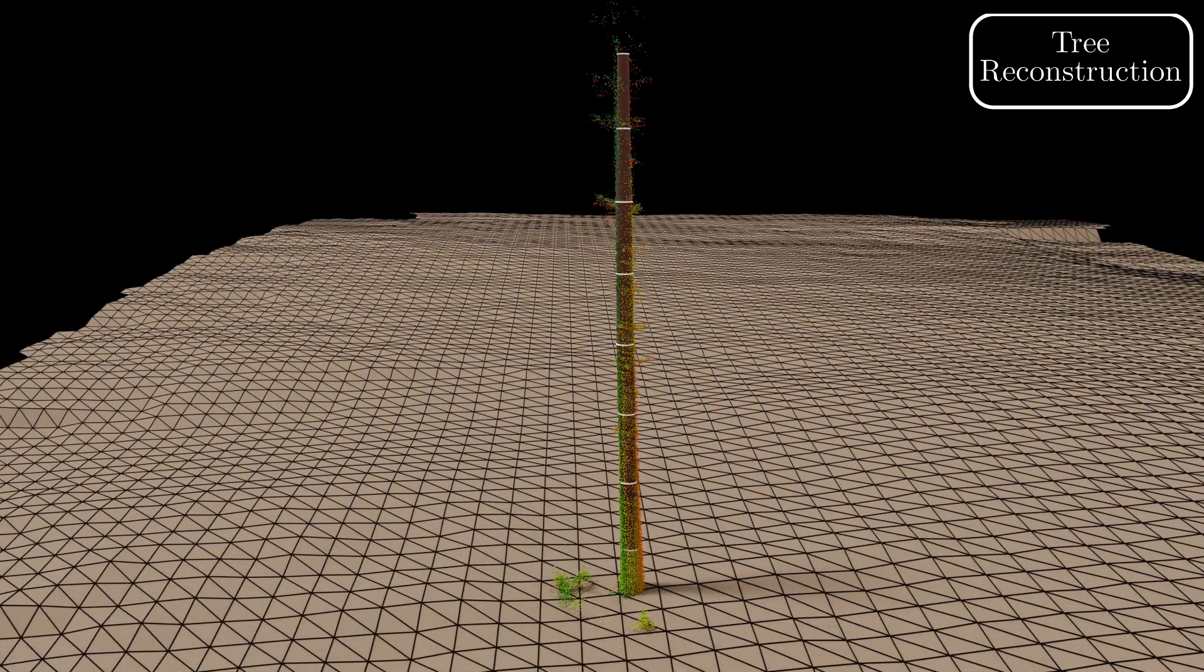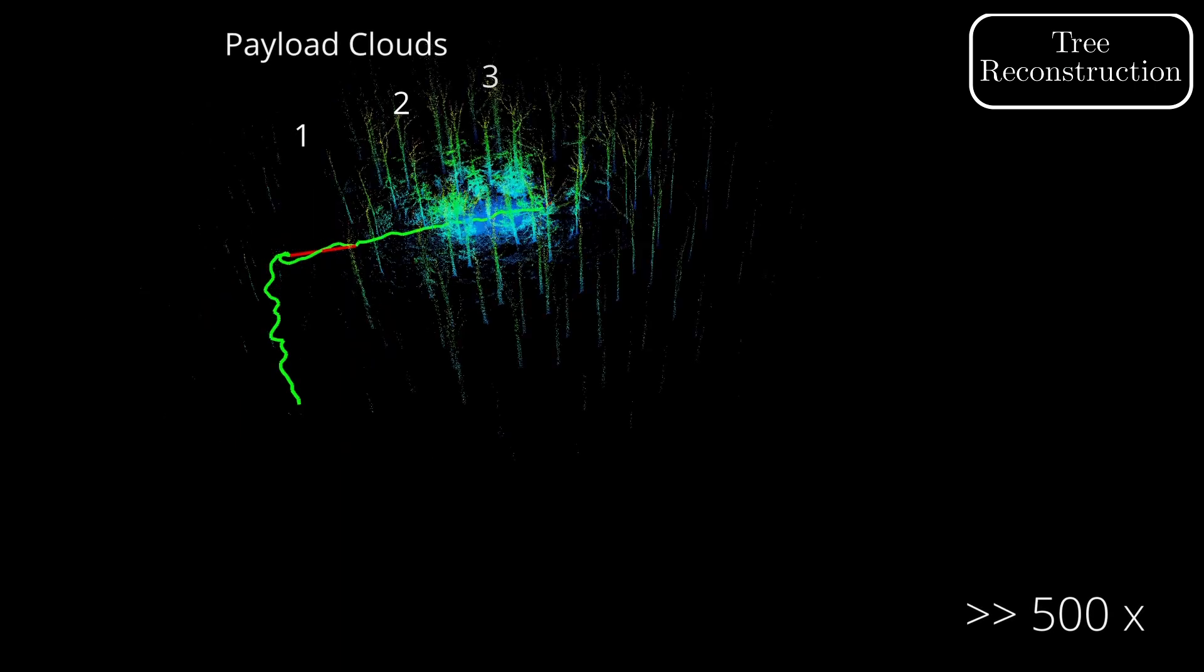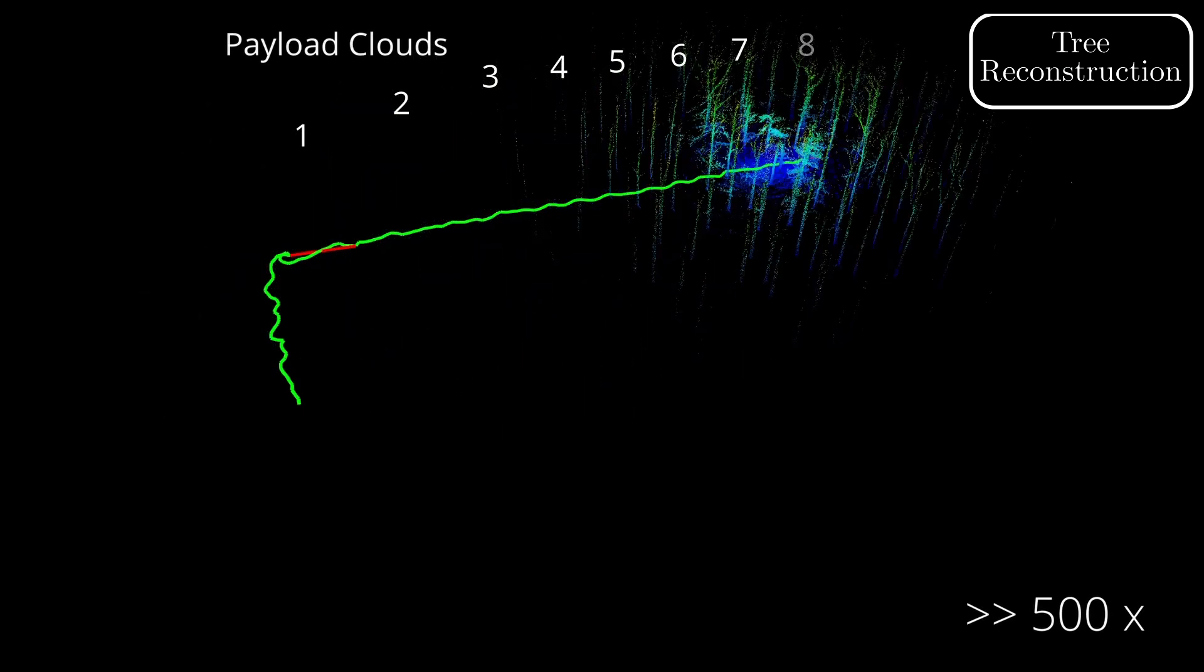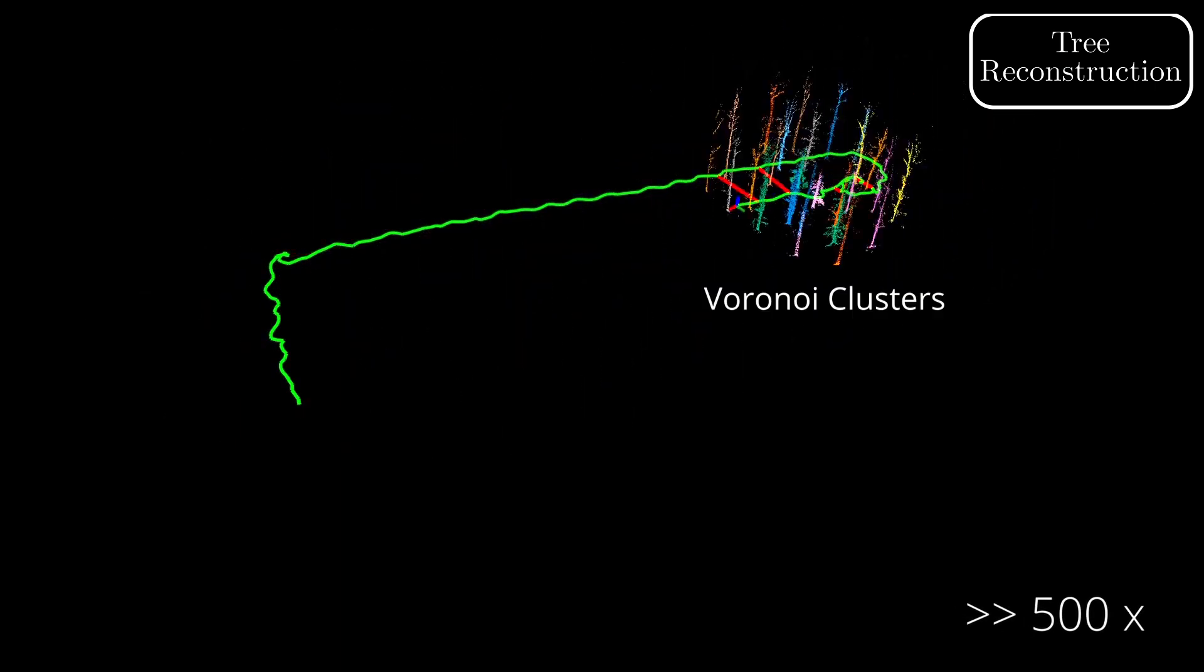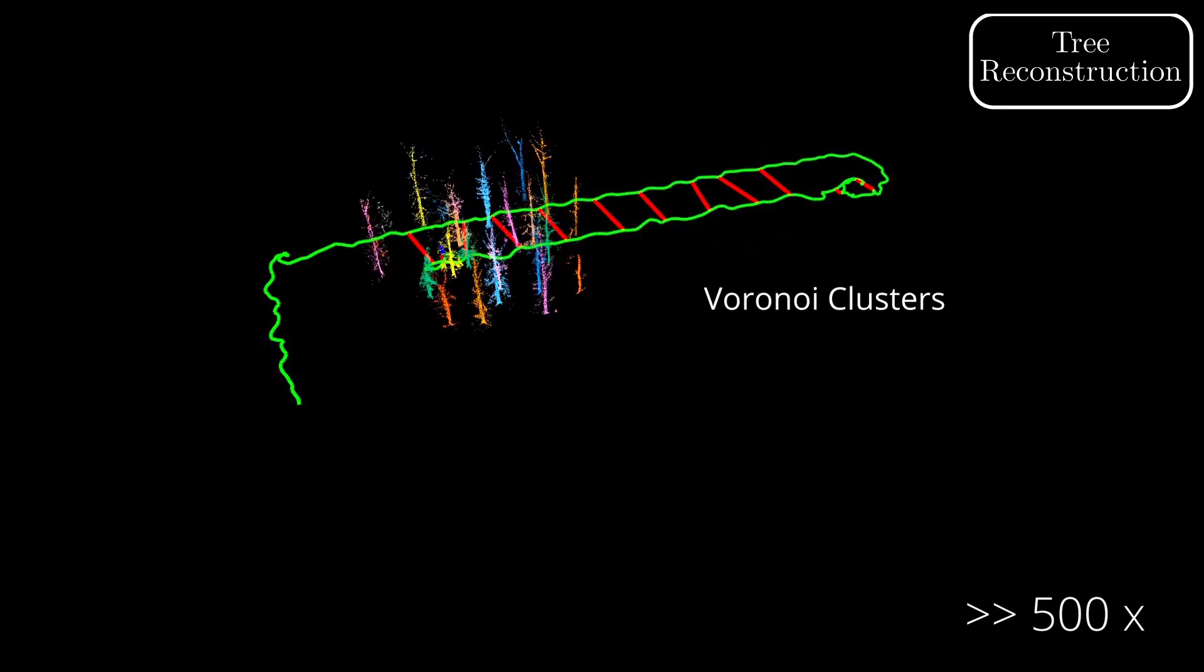Using stacked oblique cone frustums between these circles, we build the final model of the tree. We demonstrate this pipeline by deploying a quadruped robot carrying our mobile mapping system on a fully autonomous mission.